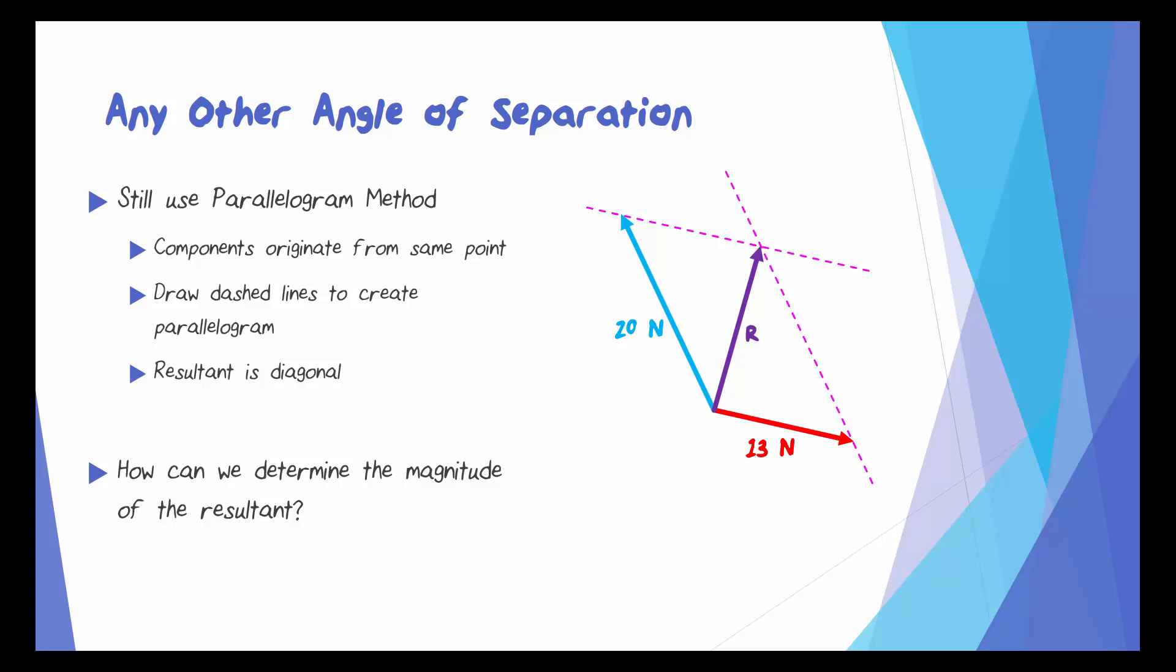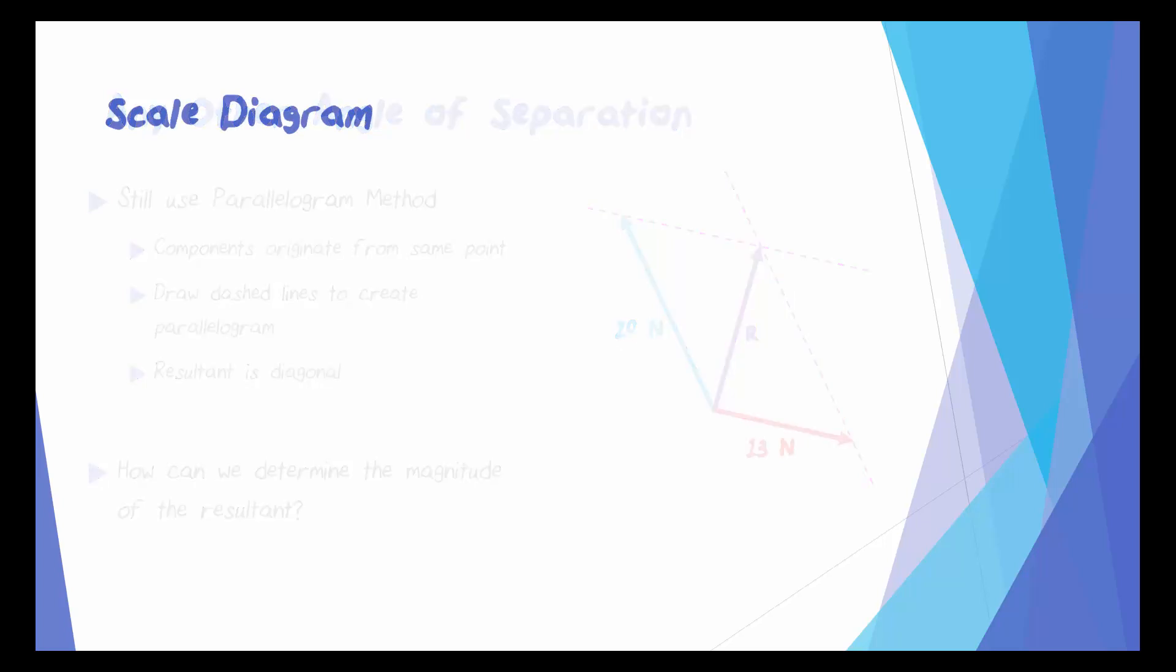How can we determine the magnitude of this resultant, though? It looks like one of those angles is pretty close to 90 degrees, but we can't be sure of that, so I don't think it's safe to use the Pythagorean theorem. In fact, the only way we could figure out the magnitude of the resultant is if we used a scale diagram.